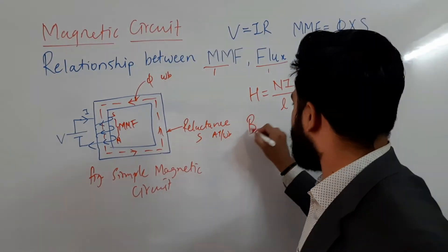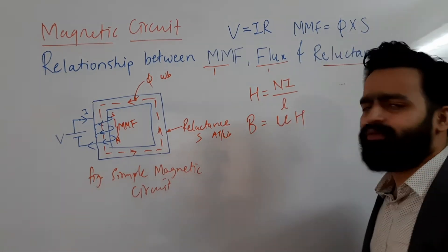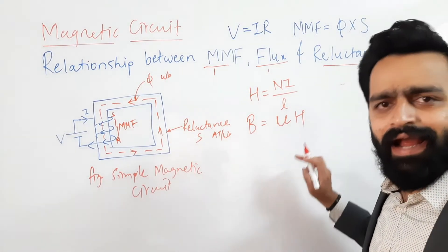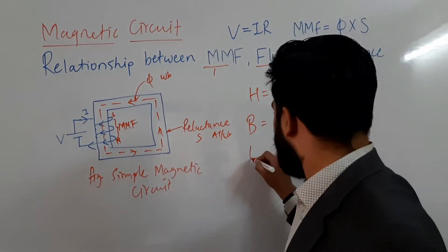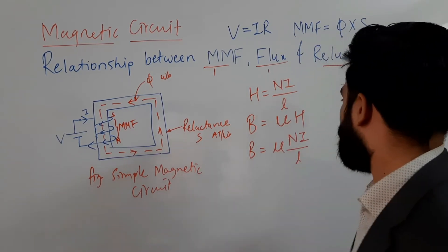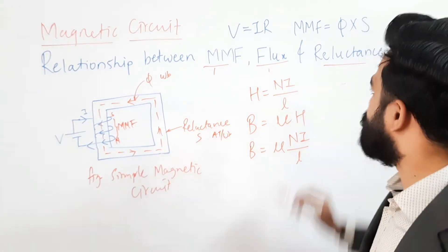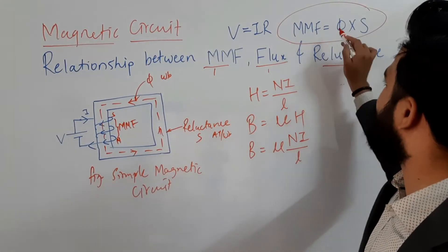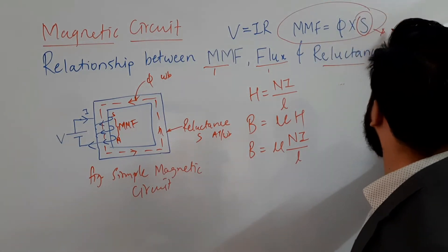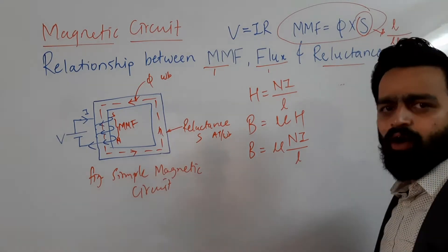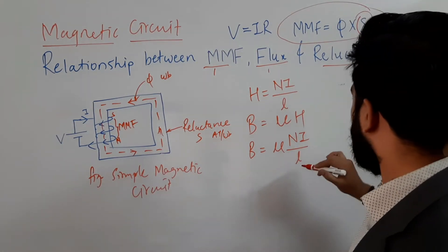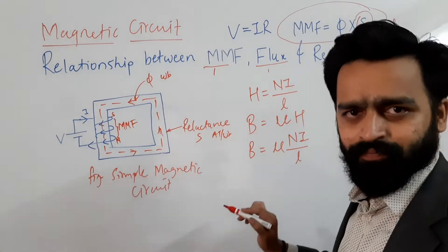There will also be some flux density, which is equal to B = μH. Substituting H = NI/L into this, we get B = μ(NI/L). Our aim is to obtain the equation MMF = flux × reluctance. We know that the equation for reluctance is S = L/(μA), so we need to bring in the area A. We have L and μ; we now need to introduce A.